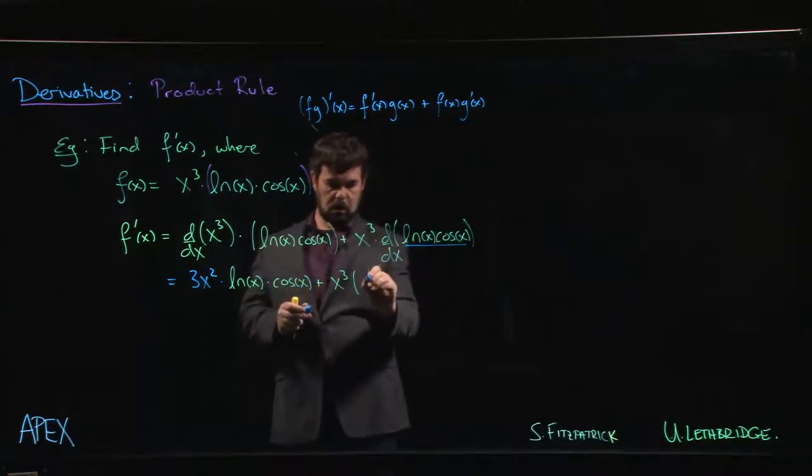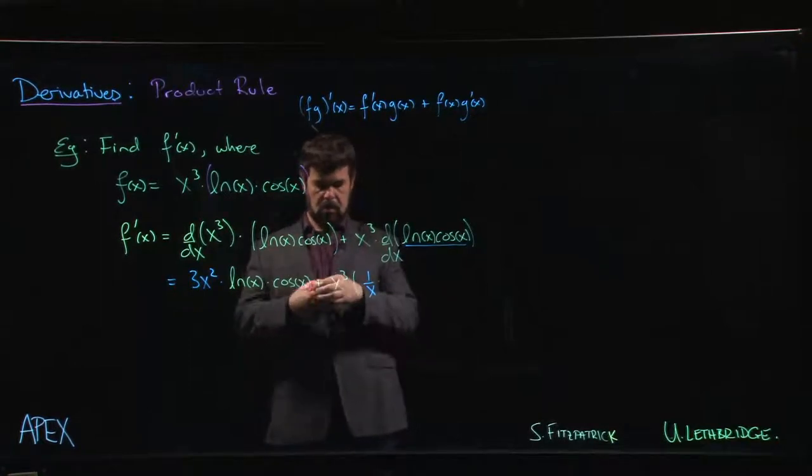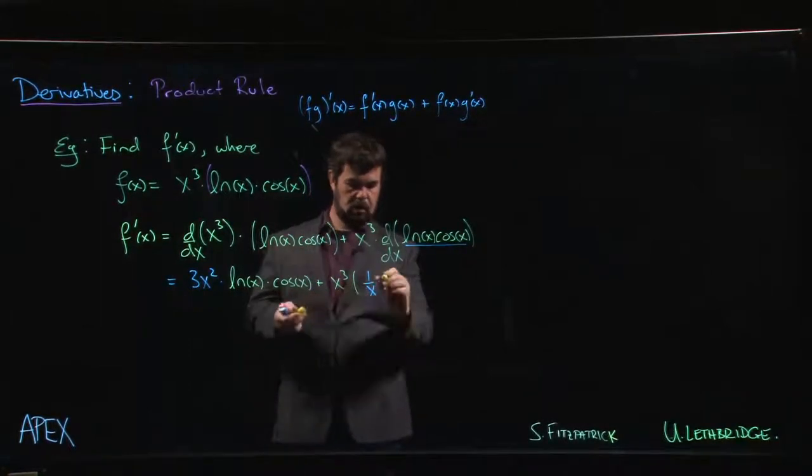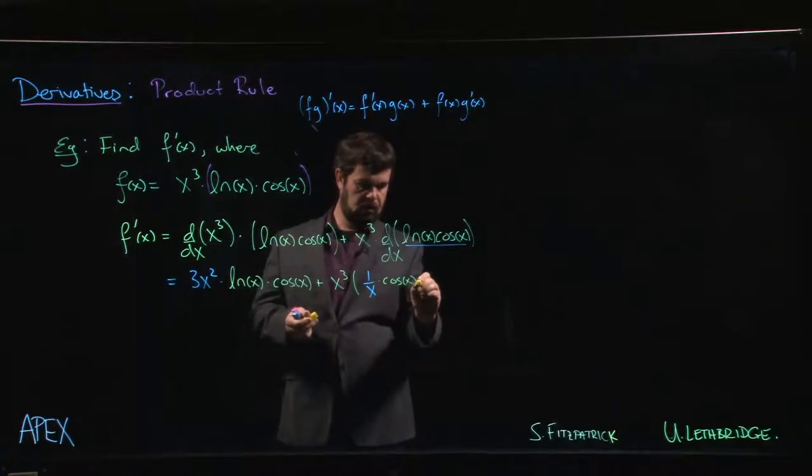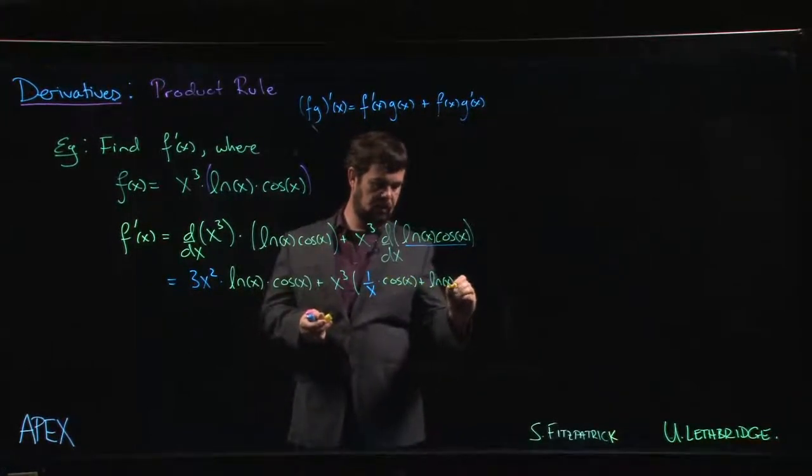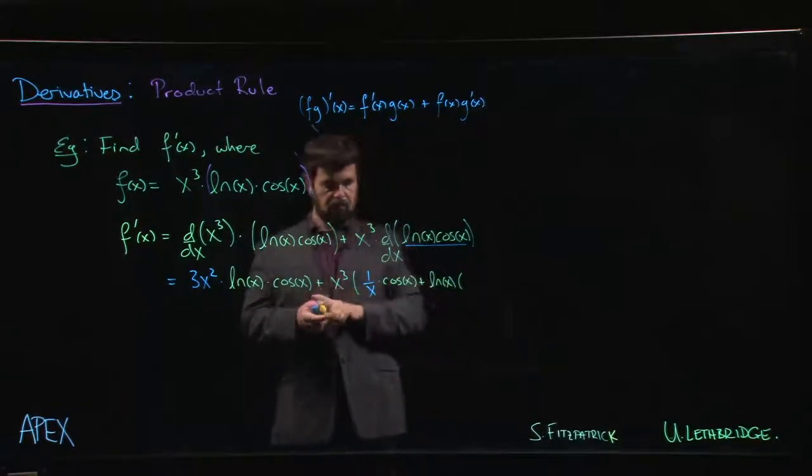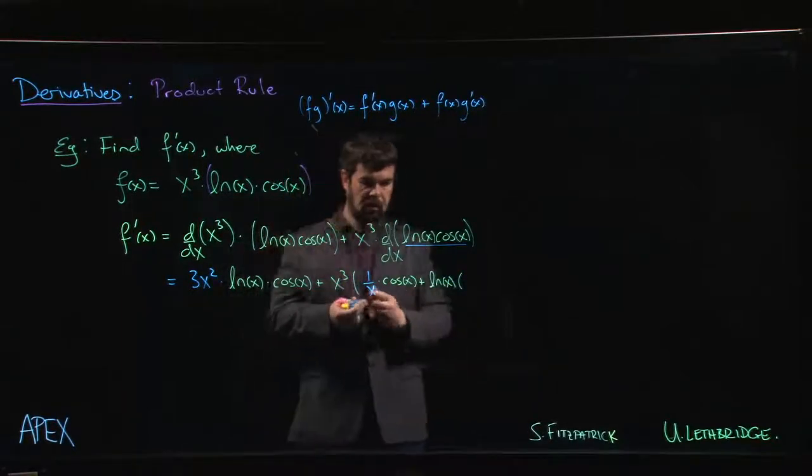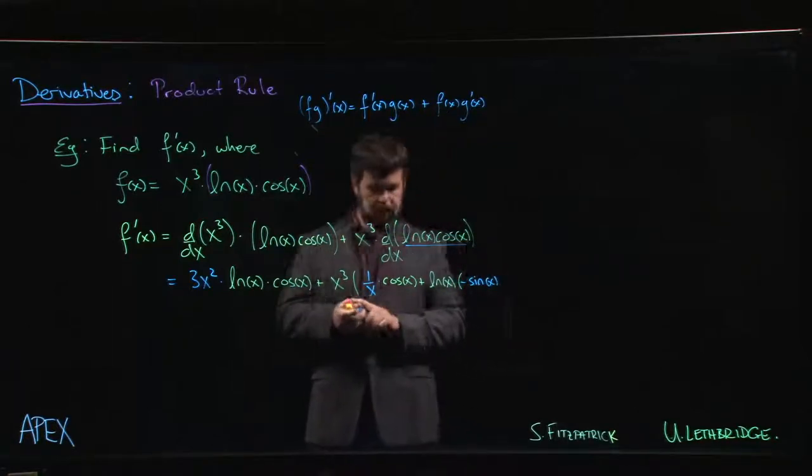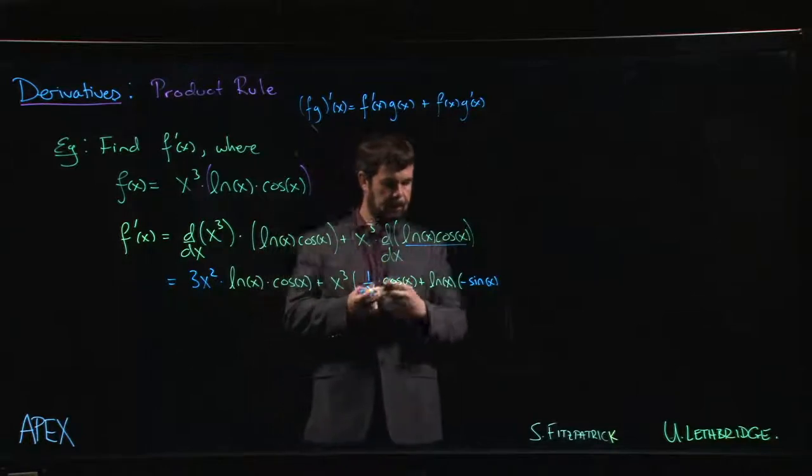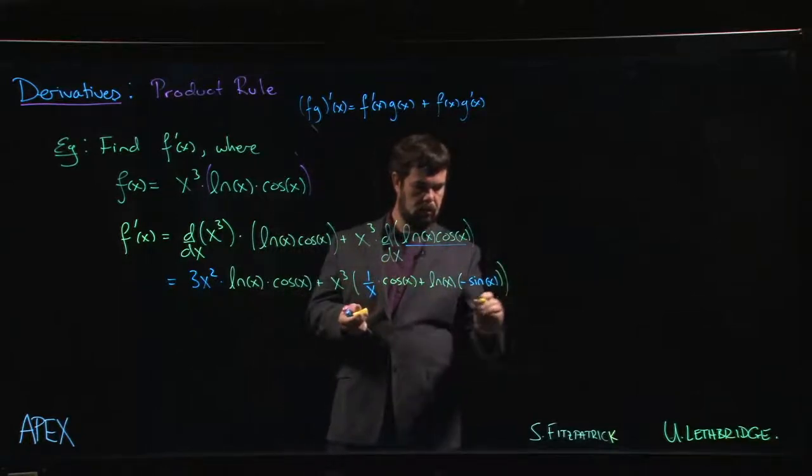Times cos x, plus the natural log of x times the derivative of cos. And you'll recall that the derivative of cos is negative sine.